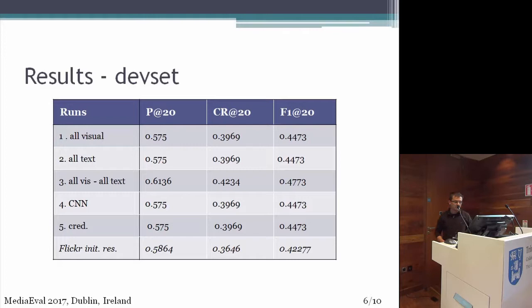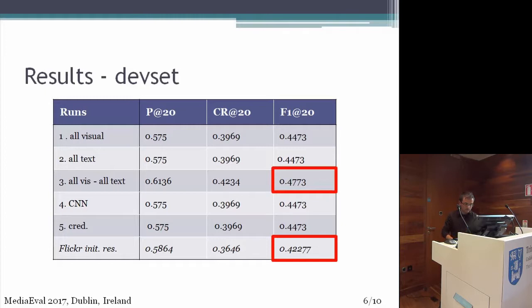We chose this combination and here we have the results on DevSet. We submitted five runs: visual, textual, visual-textual, CNN-based, and credibility descriptors. We achieved the best F1 metric score for visual and text descriptors. We also provided a quicker initial result — as you can see, we are 5% above this initial result in terms of F1 metric score.